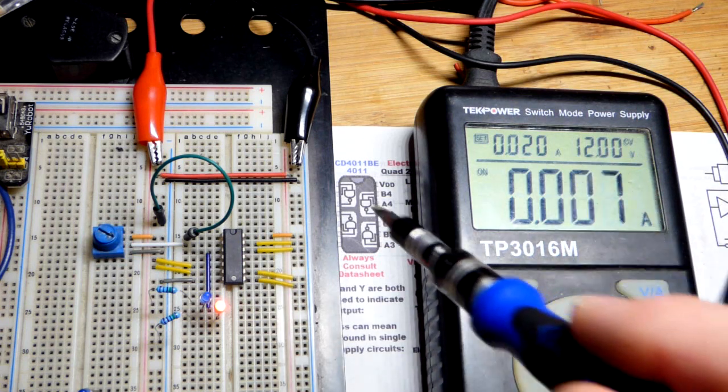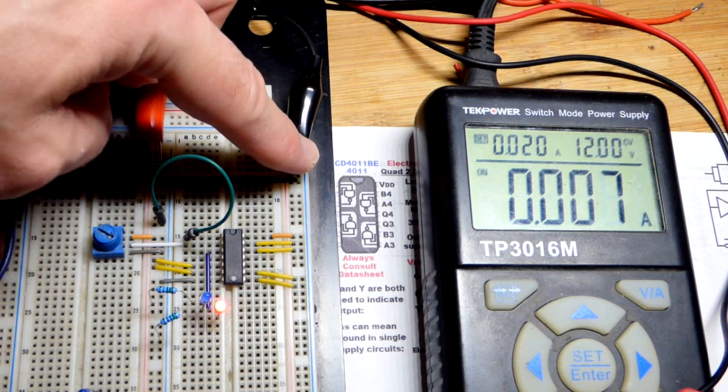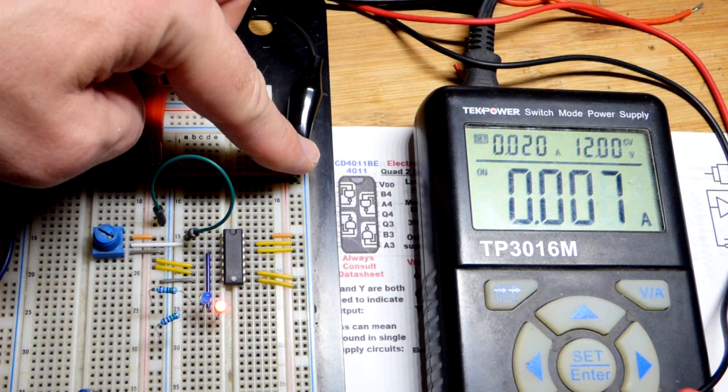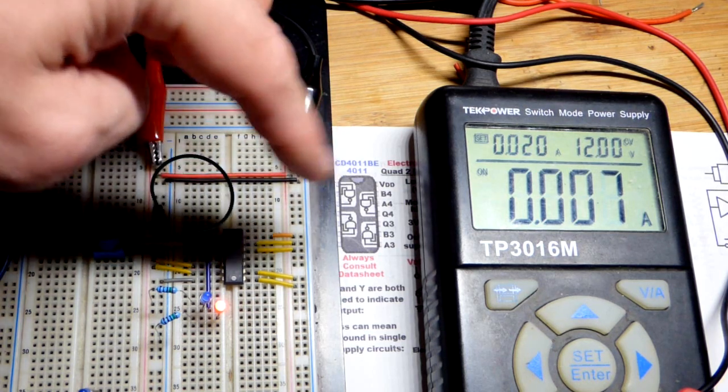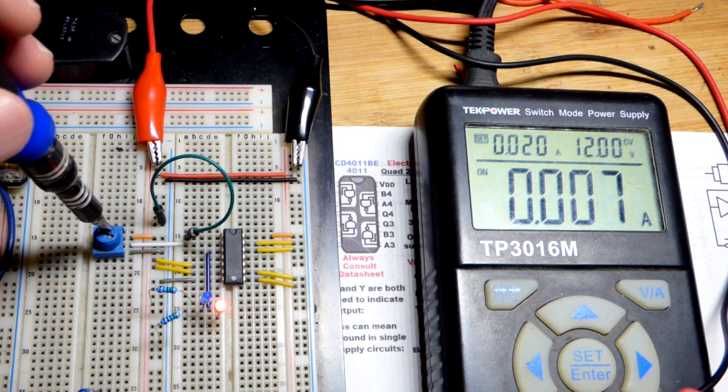So I always look at the data sheet for the particular chip you're using. And since this is a CMOS I'm going to try to make sure I discharge my body of any static charge it may have before I touch something with a direct connection to that. Just thought I'd mention that.